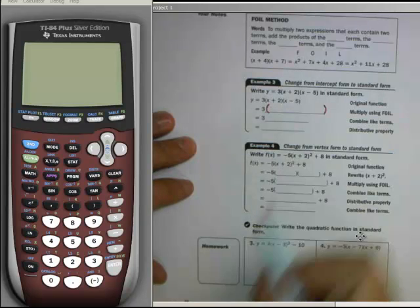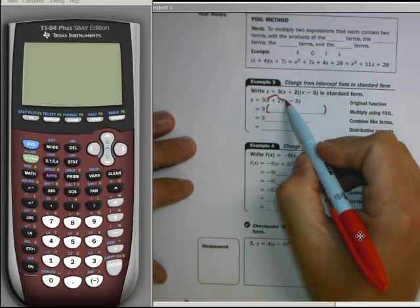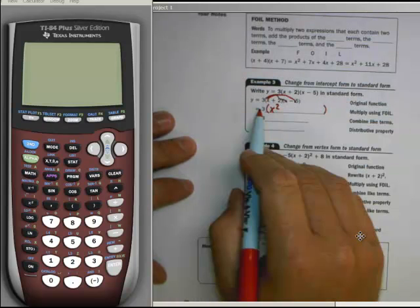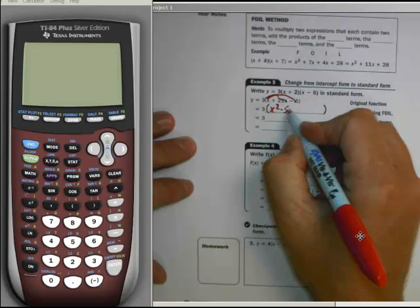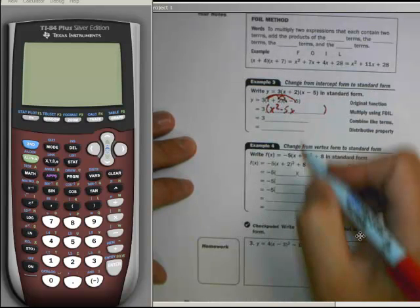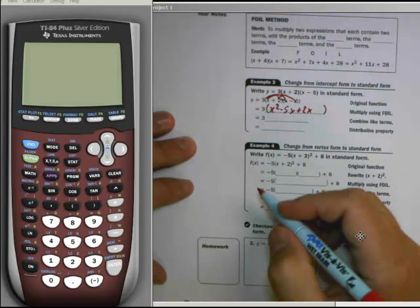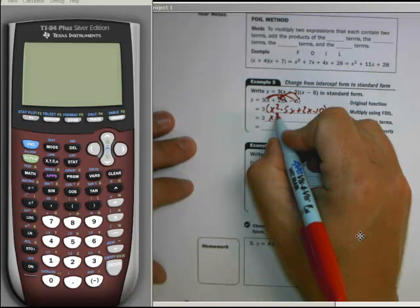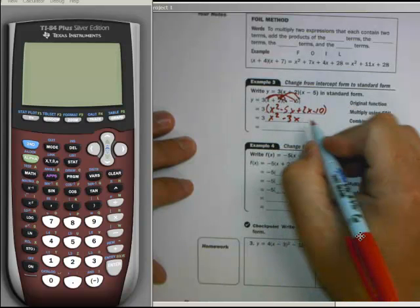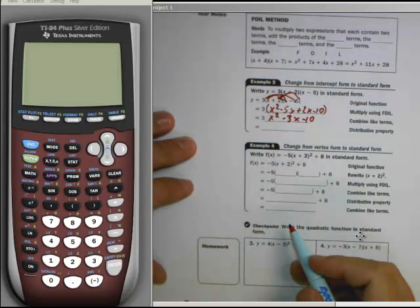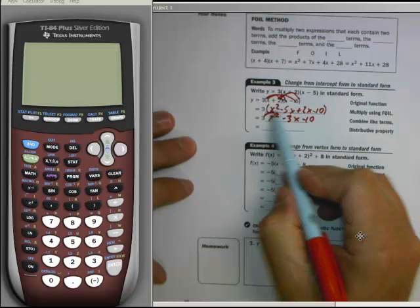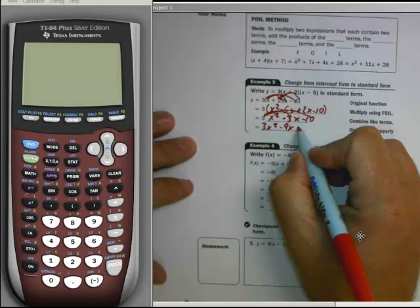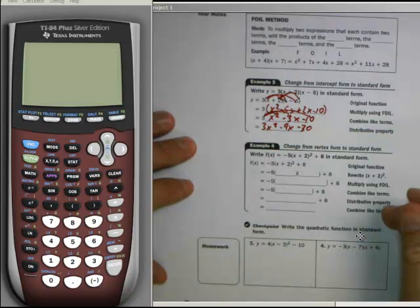We're going to leave that 3 on the outside. We have first, x times x is x squared. Outsides, x times negative 5 is negative 5x. Insides, plus 2x and negative 10. x squared minus 3x minus 10. And then you give it a whoop, whoop, whoop, 3x squared minus 9x minus 30. Don't forget about the FOIL method.